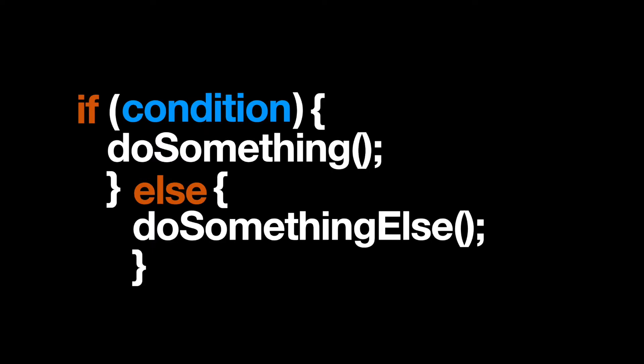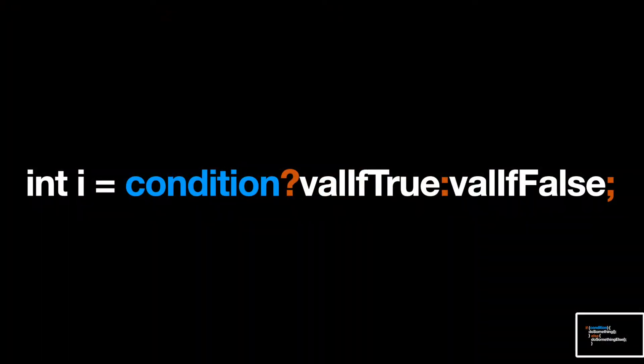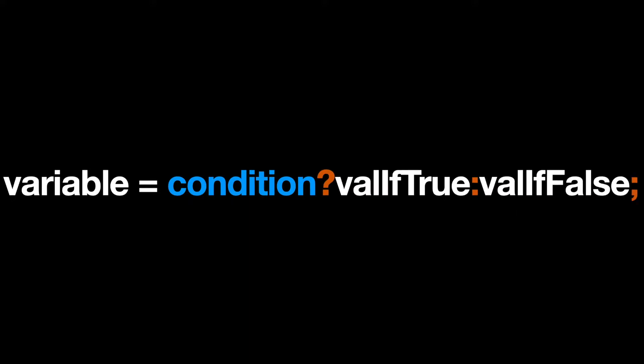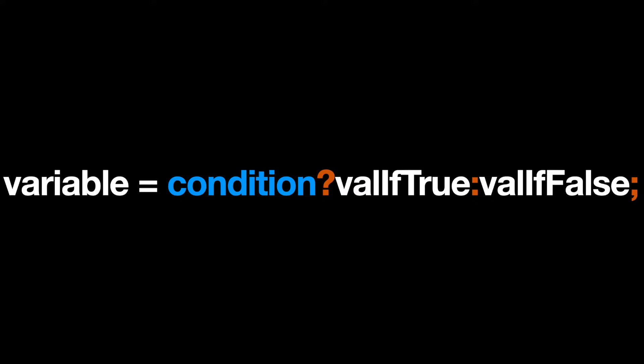It's four lines just for a basic if-else statement. So what if we could condense that all into one line? Well, it turns out we can using a ternary operator, or shorthand if-else statement, in Java. The basic syntax is: variable equals condition question mark, value to set if condition is true, colon, value to set if condition is false.